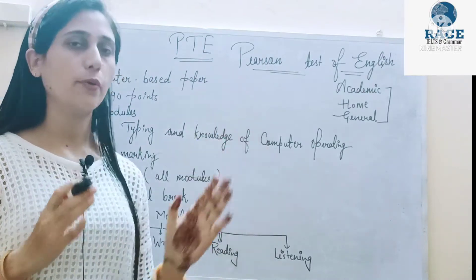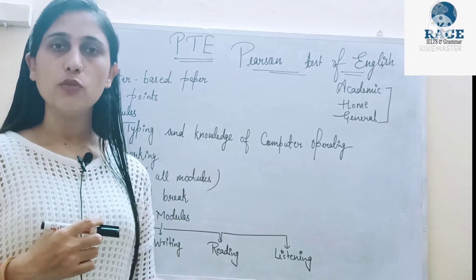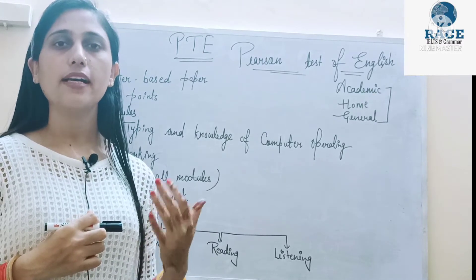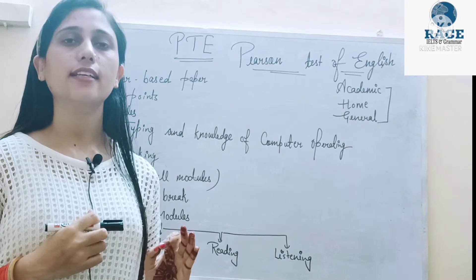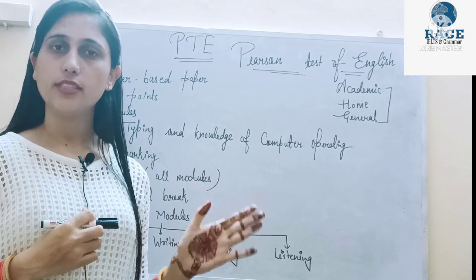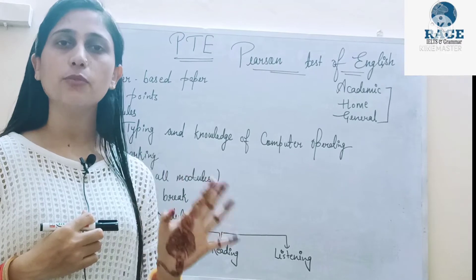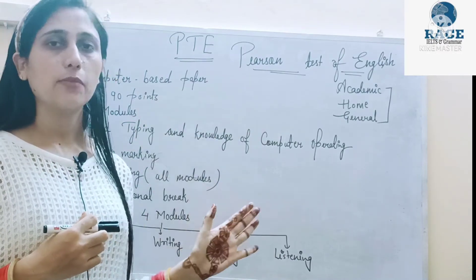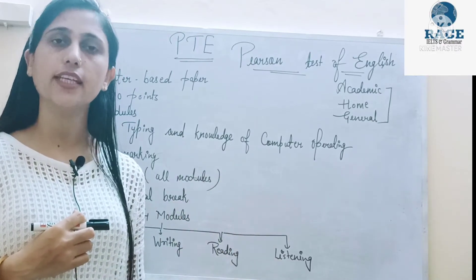If you get good points in PTE — equivalent to 6.5 bands — then you will not have a problem getting 7 each for PR. That's why you have to consider PTE. If you have to do IELTS but are not able to, then you may move to PTE. My advice is: if you have to go to Australia and aim for PR, then PTE is very necessary. I would say PTE might be around 5% easier than IELTS, though I won't say too much. So that is why I'm going to tell you all about PTE today, and remaining things will come when we start the PTE course.